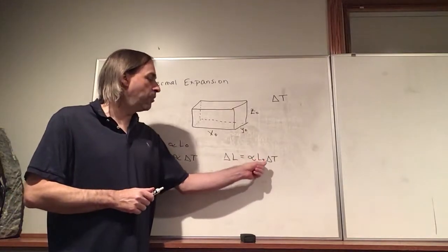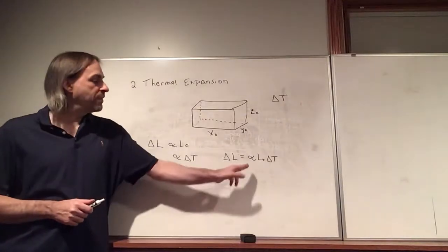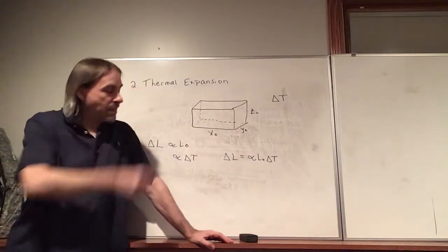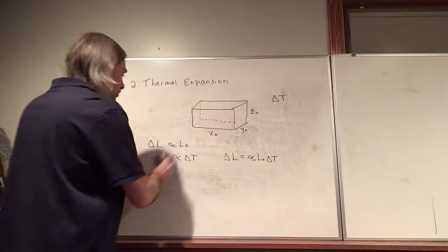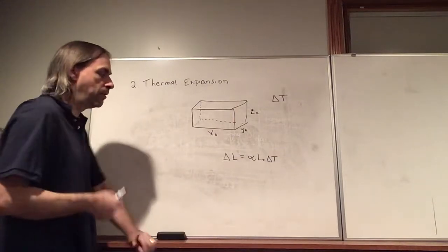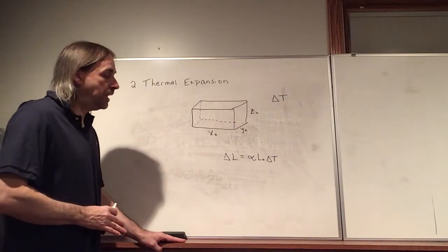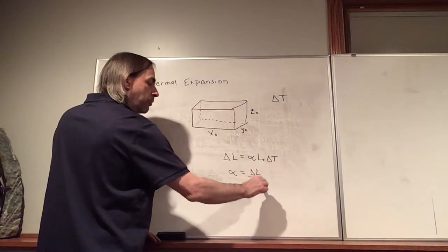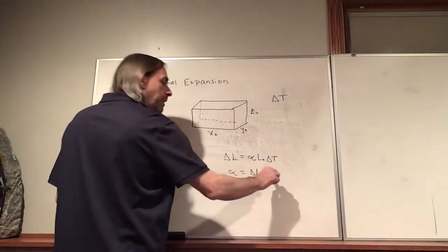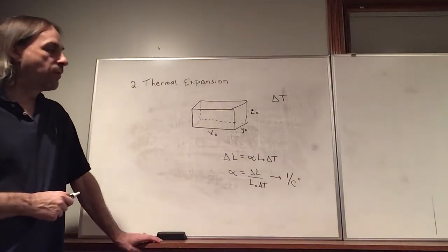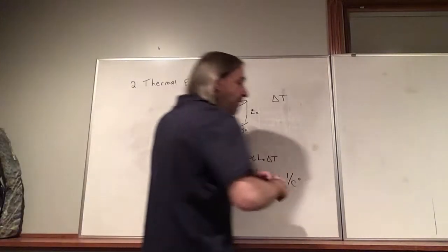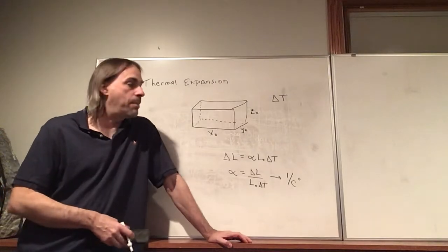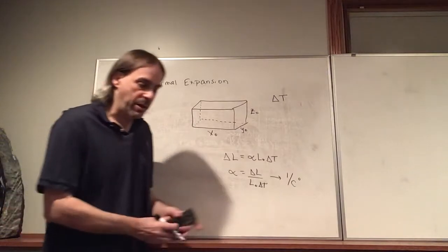The other factor is the type of material. Combining everything into a single equation: the change in length delta L equals alpha times L-naught times delta T, where alpha is the linear expansion coefficient. Alpha depends on the material. Solving for the units of alpha: delta L over L-naught times delta T gives length over length times degrees, so the units are inverse Celsius degrees.